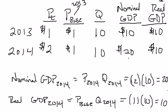You might have noticed that nominal GDP and real GDP are the same for the base year, 2013. That's no accident — mathematically it has to be the case. The reason is because if 2013 is the base year, we're using prices from 2013 to calculate real GDP. And when calculating nominal GDP, we're also using prices from 2013. Since those two prices are the same, nominal GDP and real GDP are going to be equal.